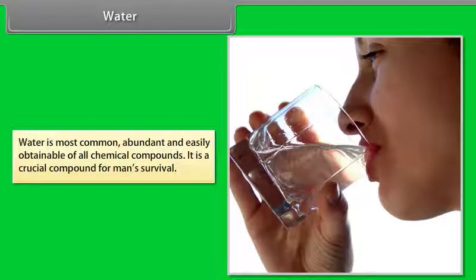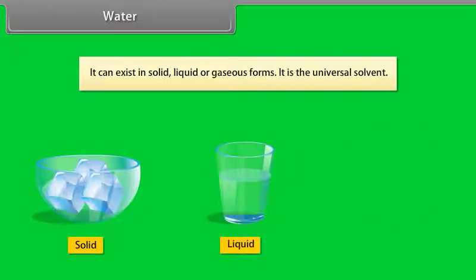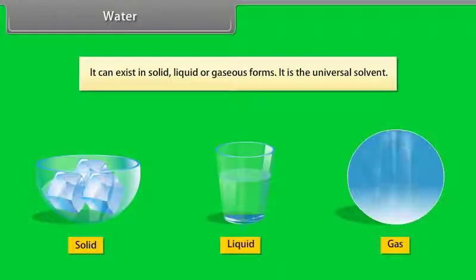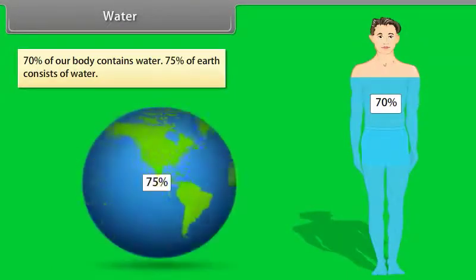Water is the most common, abundant, and easily obtainable of all chemical compounds. It is a crucial compound for man's survival. It can exist in solid, liquid, or gaseous forms. It is the universal solvent. 70% of our body contains water, and 75% of Earth consists of water.